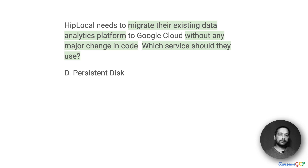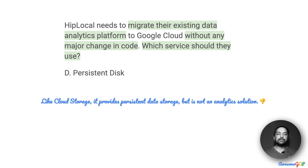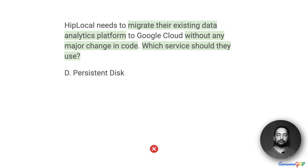Option D suggests that we use a persistent disk. But like the option of Cloud Storage, this is simply a place where we can store data. By itself, it is not an analytic solution at all. Therefore, we can easily eliminate option D.